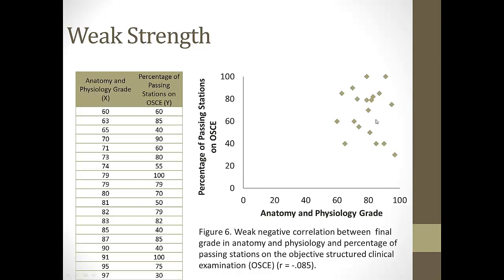Here's an example of a weak relationship. It's really hard, just looking at the scatter plot, to determine the direction. Looking at anatomy and physiology grade and the percentage of passing stations on the OSCE — research actually shows there's not much of a relationship between your anatomy and physiology grade and how well you do on this exam. This is a weak relationship. The correlation coefficient is pretty small, and it is negative, but it's so small that there's not really any true relationship between these variables.